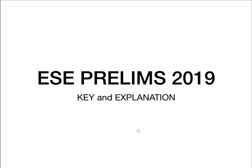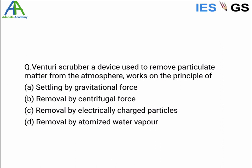We are discussing ESC prelims 2019 key and explanation. The next question is about a venturi scrubber, which is used to remove particulate matter from the atmosphere. It works on the principle of — we know what a venturi device is, so we can easily answer this.